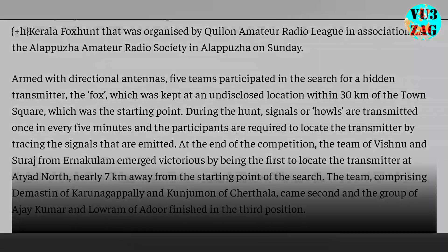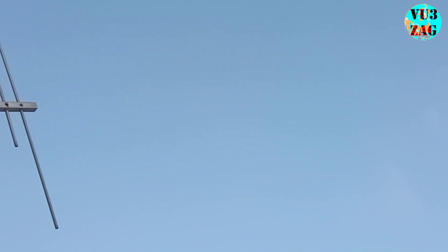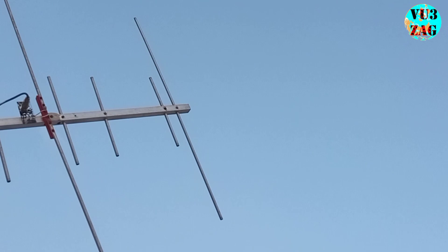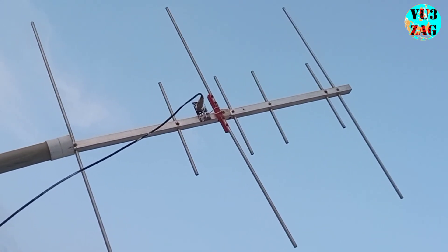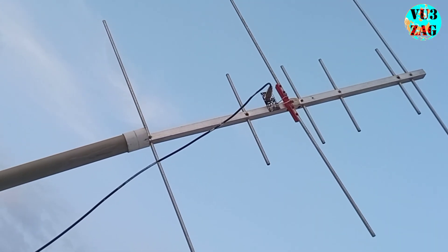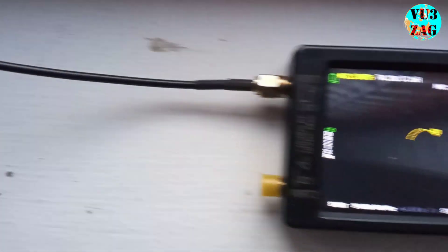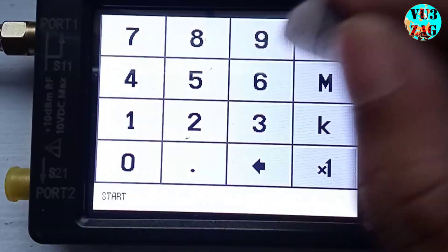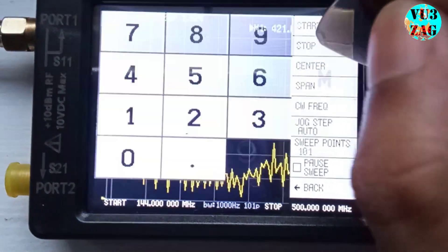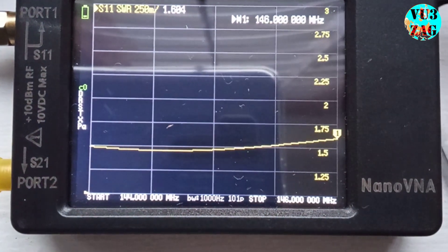Now let's put it to the test. I have temporarily mounted the antenna on a PVC pipe for analysis. Extending a coaxial cable from the antenna, I have connected it to the S11 port of the Nano VNA. Now let's start with VHF band measurements. Setting the frequency range from 144 to 146 MHz reveals a SWR of around 1.5.